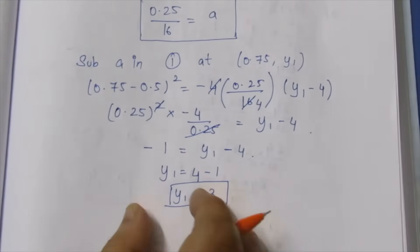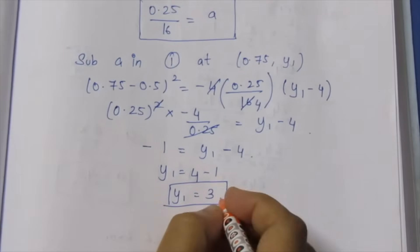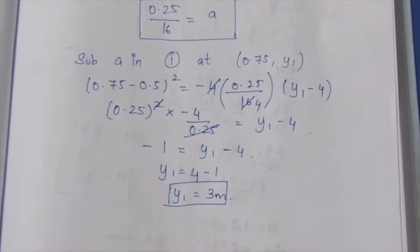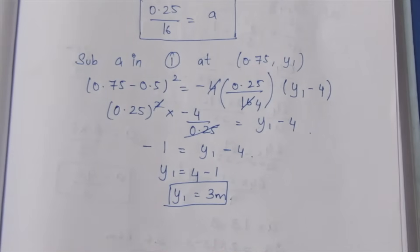So y1 is equal to 3. The height of the water at a horizontal distance of 0.75 meters is 3 meters. That is the final answer. Thank you.